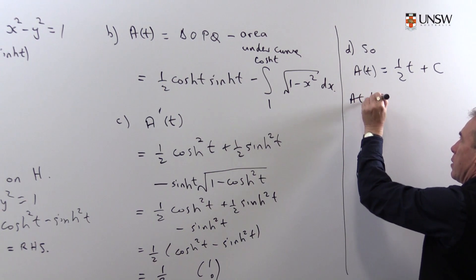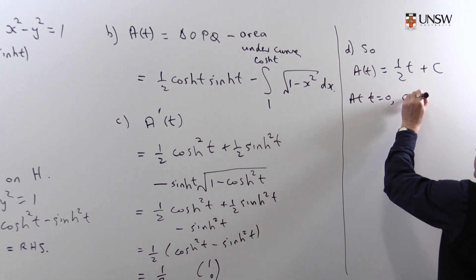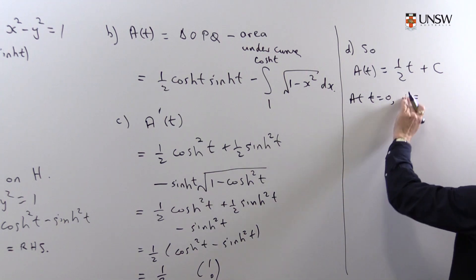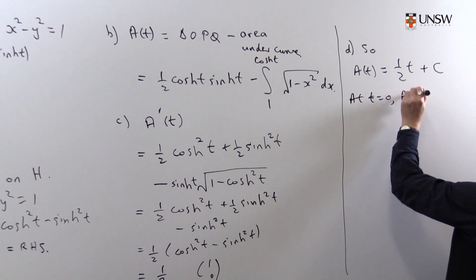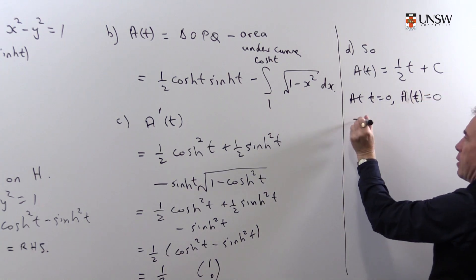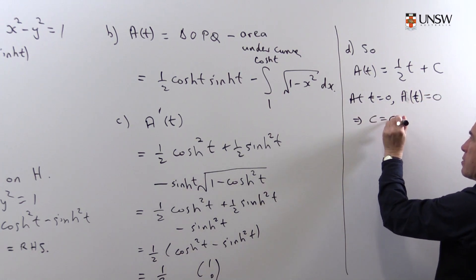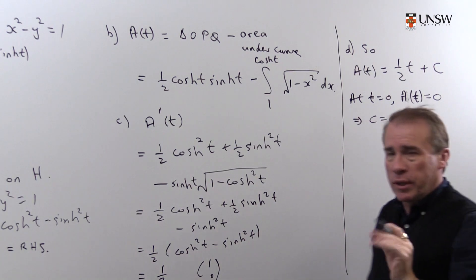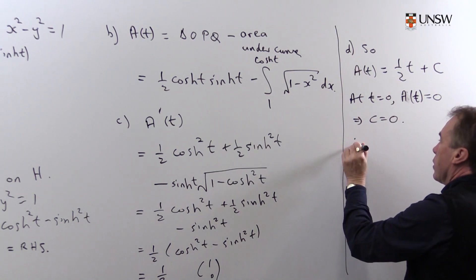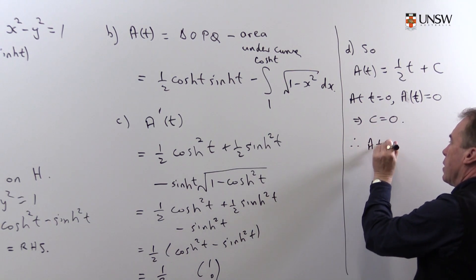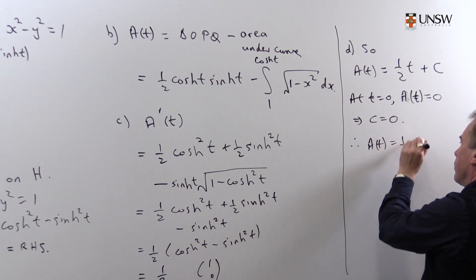So at t equals zero, the constant is going to be, sorry, A of t, is going to be zero, and so that tells me the constant is zero. And that's nice, because we can forget the constant, so the final conclusion is then that this area is just one half of t.